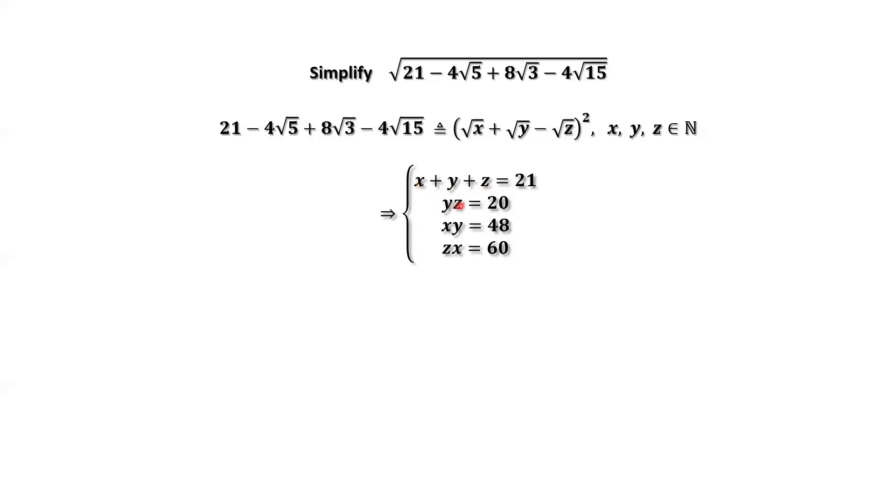y times z equals 20. x times y equals 48. This equation divided by this equation we have z equals 5 over 12 times x. From here, you can see that we can cancel y. This means we rewrite z in terms of x.